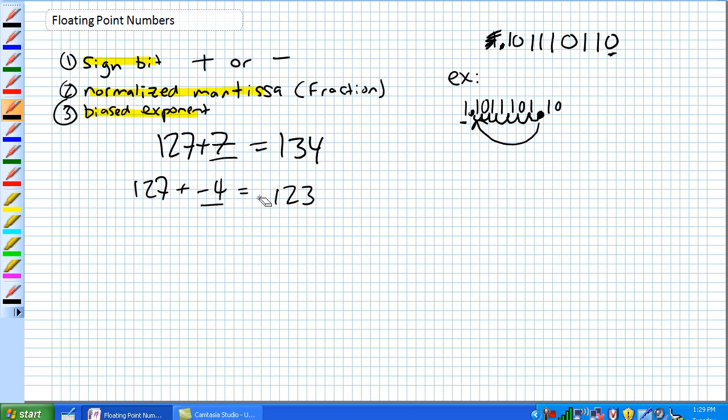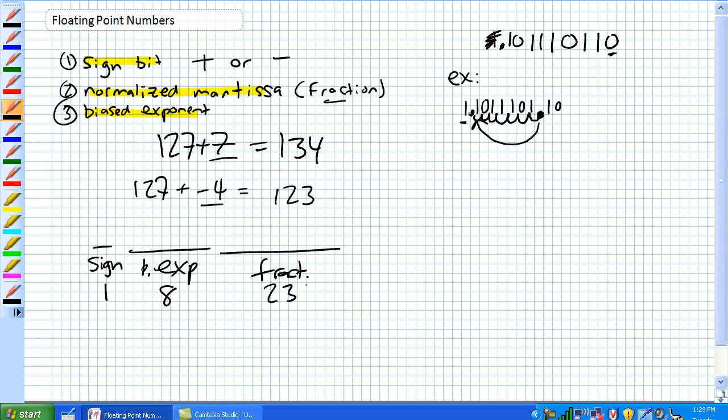We've got our single precision format. Again, there's our sign bit, which is 1 bit. And then you've got your biased exponent, 8 bits. Then you've got fractional portion, which is the normalized mantissa, and that can take up to 23 bits. So that's 32 bits.